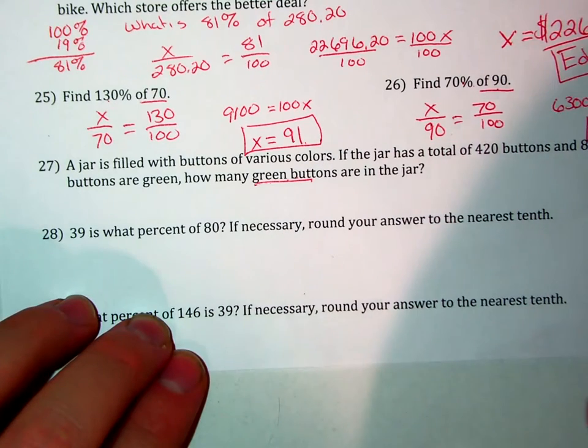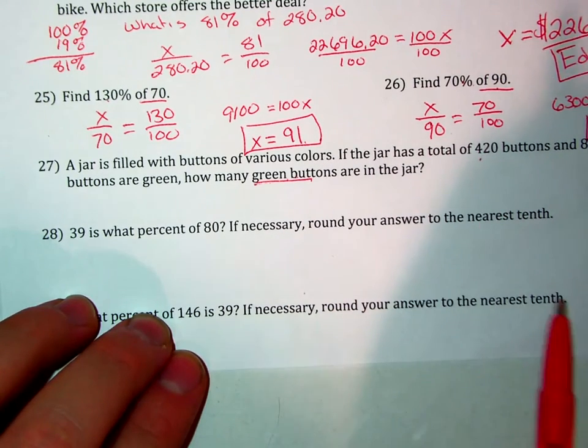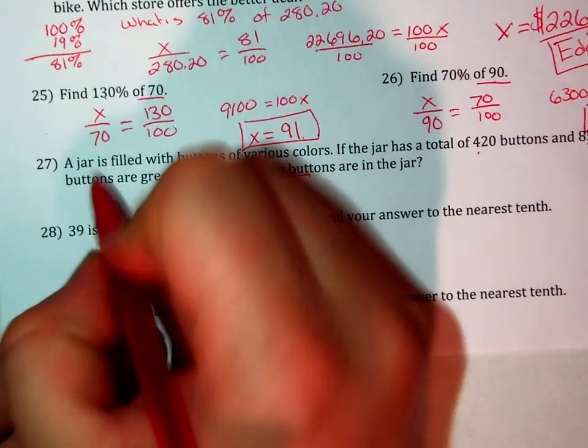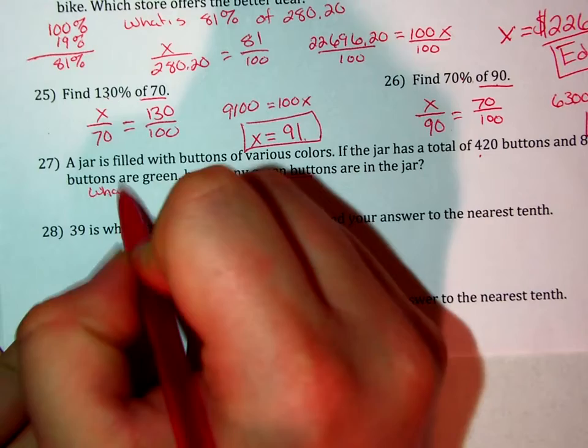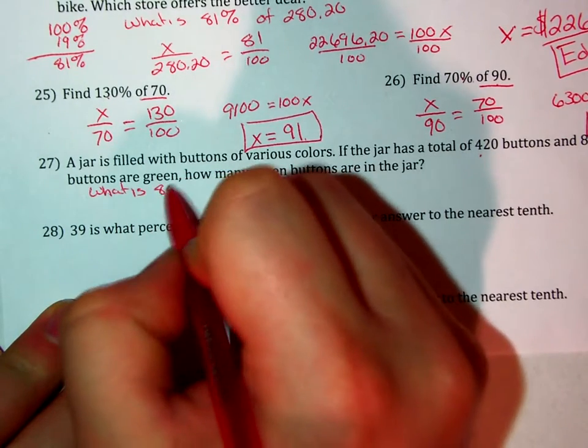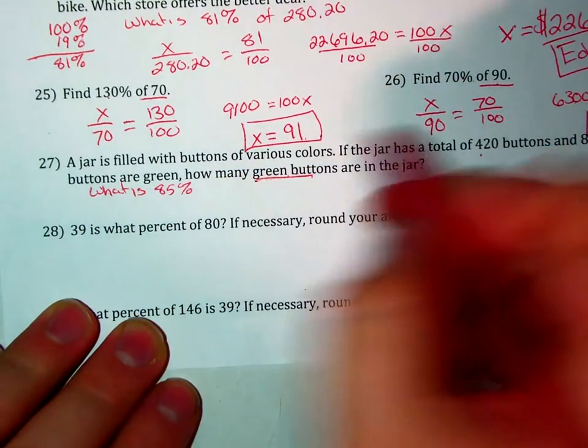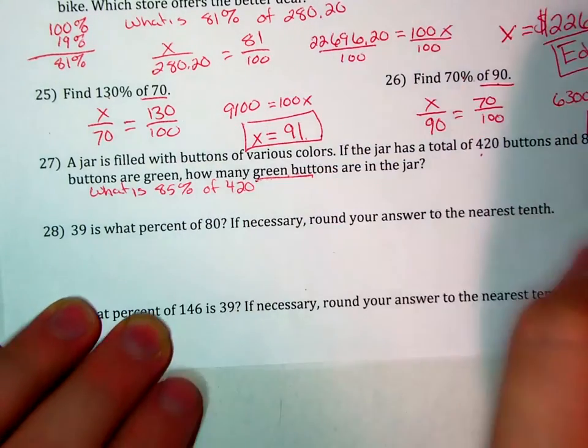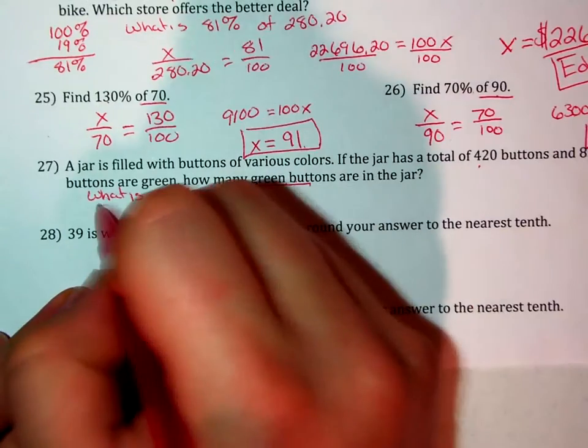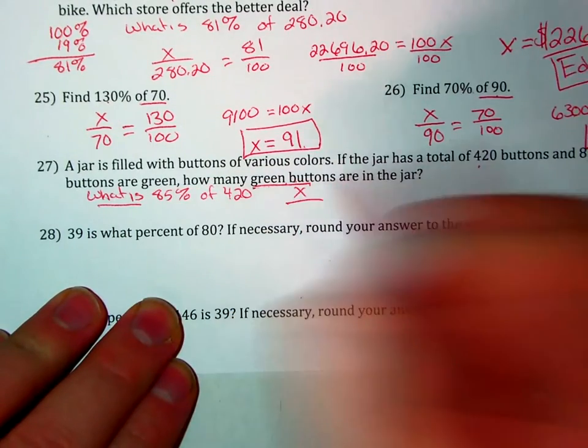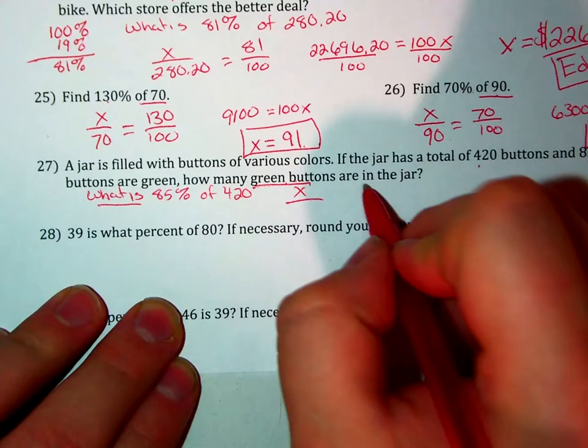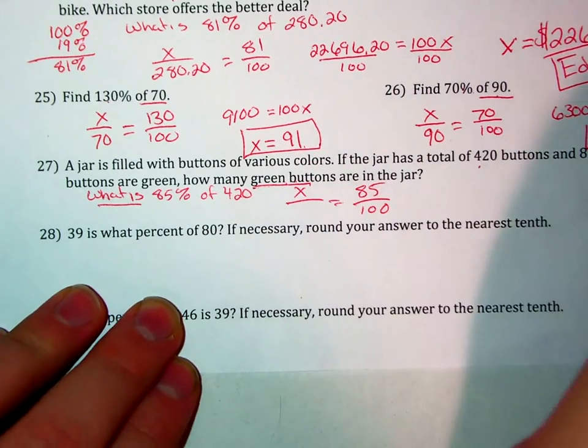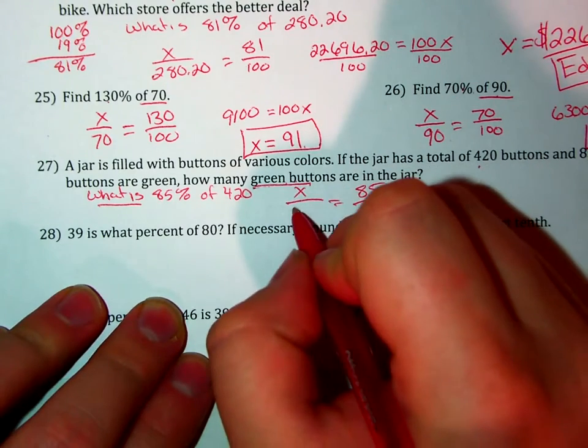We're told that 85% of 420 buttons are green, so our question is: what is 85% of 420? We'll set up our proportion with what we're looking for as the is, 85% in the percent position over 100, and our of is 420.